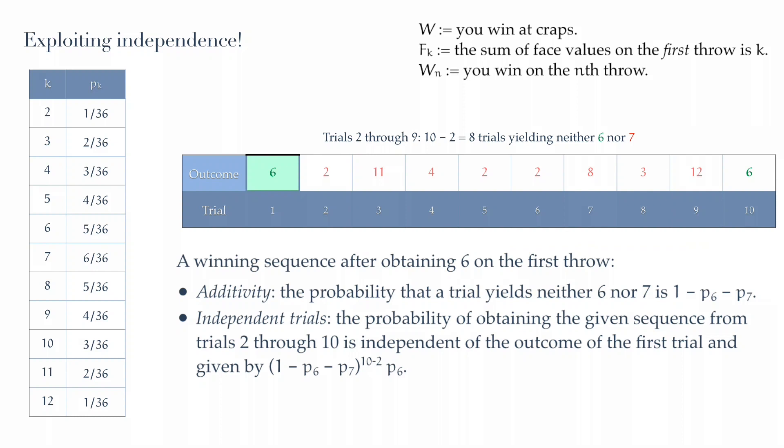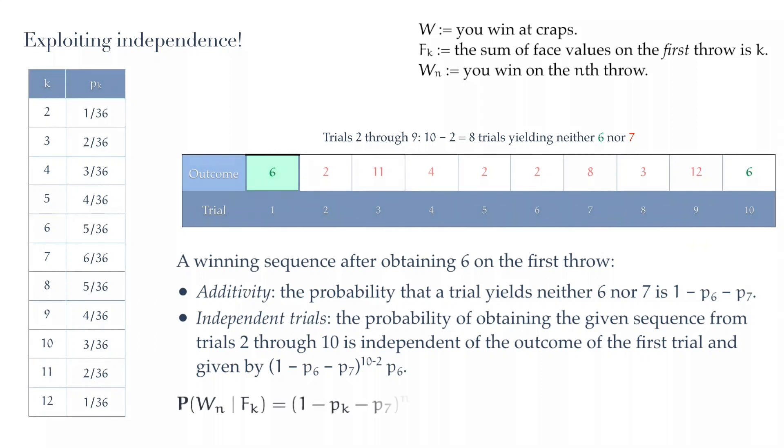The N minus 2 trials can be neither K nor 7, and therefore the probability of each of those, the atomic probability is 1 minus Pk minus P7. There are N minus 2 of those, followed by a final trial, which results in K. Stitch it all together.